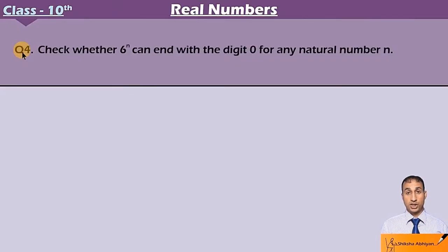Student, see the question. Check whether 6^n can end with digit 0 for any natural number n. We have to tell whether 6 to the power n will end with 0 or if its unit place will be 0 for any natural number. So student, let's look at the question.